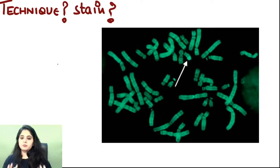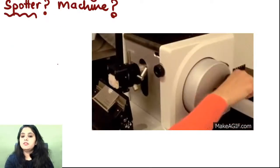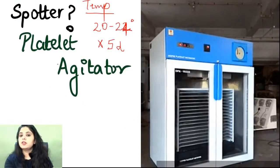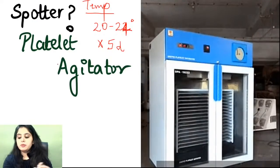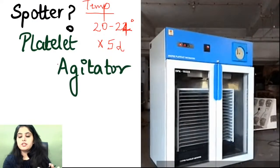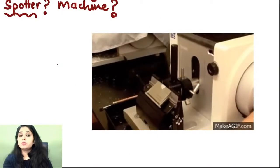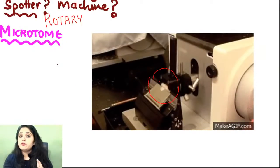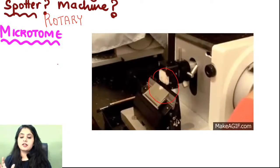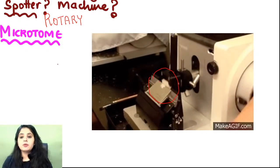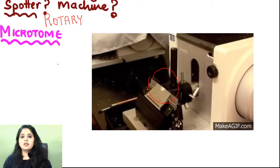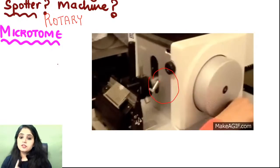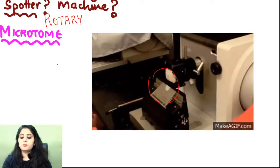Resuming after technical issues: to recap — the first machine was a platelet agitator (constant agitation prevents platelet aggregates, 20–24°C, five days shelf life). The second was a rotary microtome, not a cryostat. A cryostat keeps temperature in minus for the frozen environment and is a closed machine; the rotary microtome is open at room temperature.